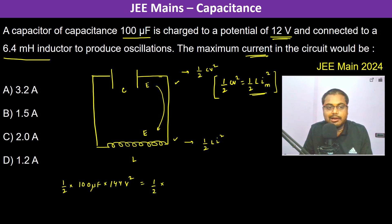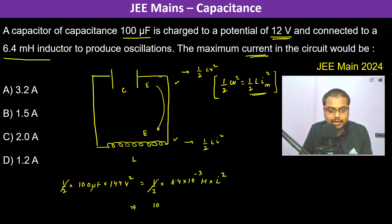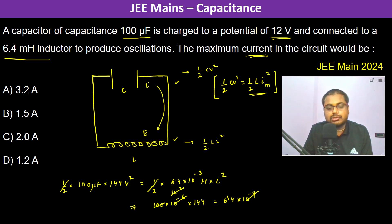So it's going to be half into L, which is 6.4 into 10 to the power minus 3 henry, into I squared. The halves cancel, giving 100 into 10 to the power minus 6 into 144 equals 6.4 into 10 to the power minus 4 into I squared. So I squared becomes 144 divided by 64.